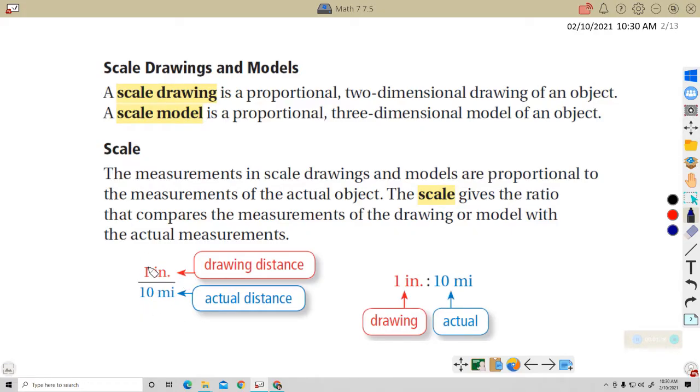For instance, here's a scale that could be from a map. One inch is equal to ten miles. And they can write it like ratio style, or they could write it with a colon ratio style. But it's basically a ratio that compares the drawing distance to the actual distance. That way you can use the map to figure out the actual distance between things.